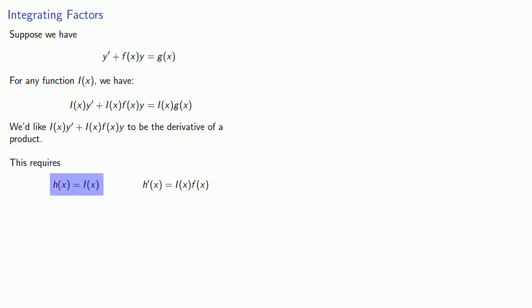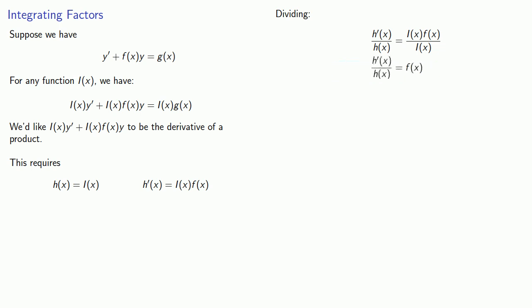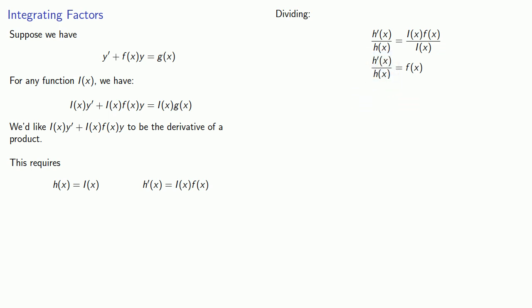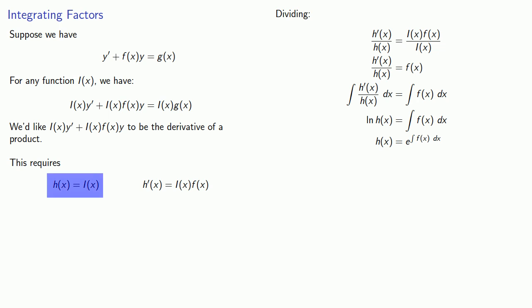Notice that h(x) and h′(x) both include the factor i(x). If we divide h′(x) by h(x), that factor drops out. The left-hand side has a very useful form: it is one over a function times its derivative. Finding the antiderivative of both sides, the left-hand side is just log(h(x)), and the right-hand side is the antiderivative of f(x). We can then solve for h(x), and since h(x) equals i(x), we now know the i(x) that will make the left-hand side the derivative of a product.